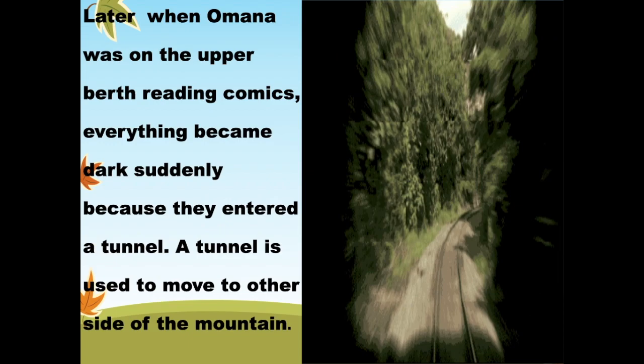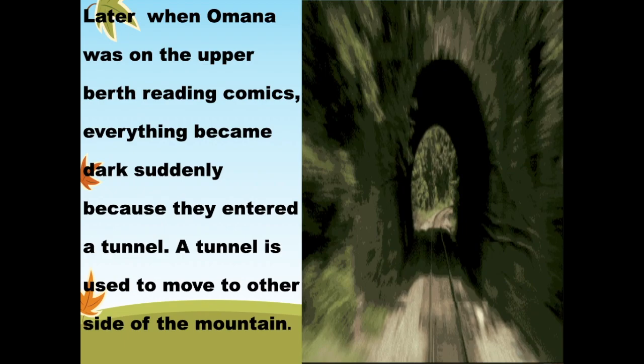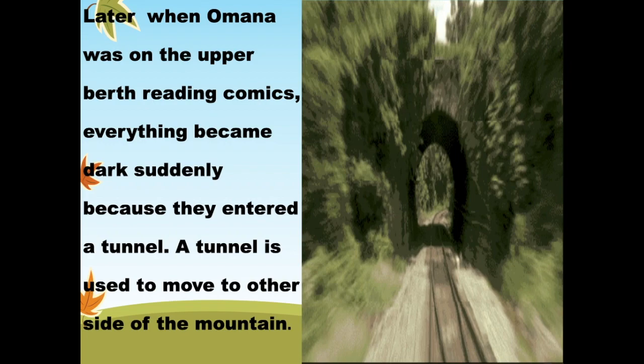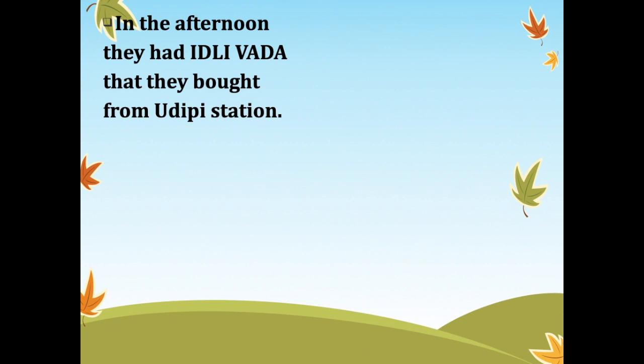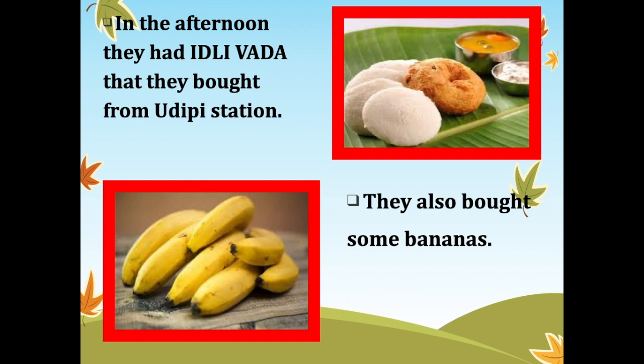Later on, Omana shifted to the upper berth and started reading comics. Suddenly everything became dark because they entered a tunnel. A tunnel is used to move to the other side of the mountain.